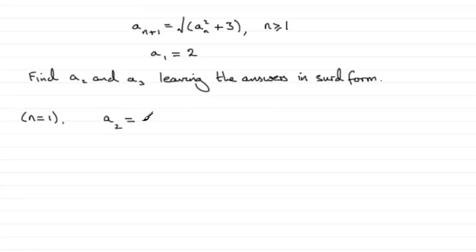And what's it equal to? Well, it's equal to the square root of a1 squared plus 3. So we've got a1 squared plus 3. And all we need to do is put in the value of a1, which was 2, so you've got the root of 2 squared plus 3. In other words, root 7. So that's your first surd value, the square root of 7.